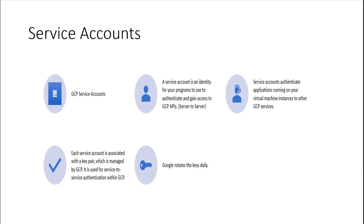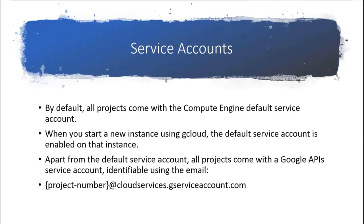If your project employs server-to-server interactions — such as between a web app and Google Cloud Storage — you need a private key and service account credentials. To generate these credentials, you view the email address and public keys you've generated. By default, all projects come with a Compute Engine Default Service Account. When you start a new instance with gcloud, it is also enabled. Anytime you see cloud services.gserviceaccount.com in an email, you know that is a service account.